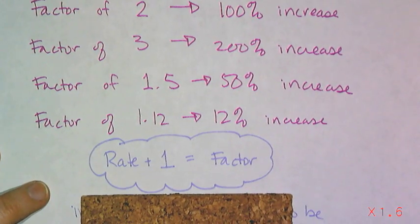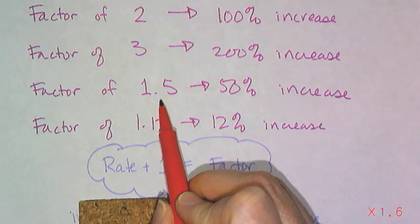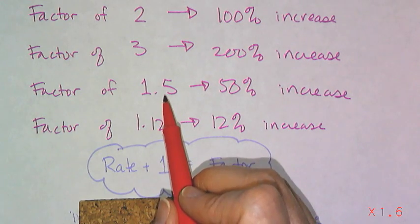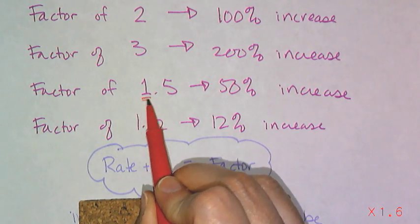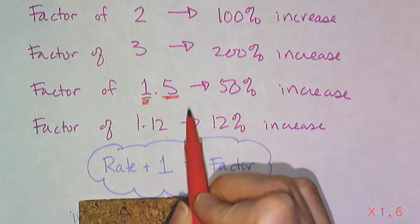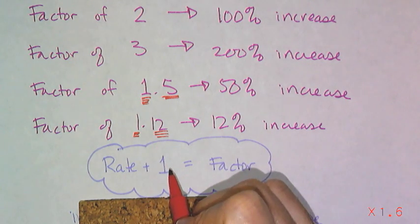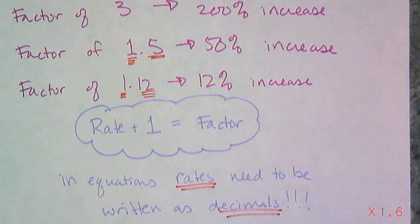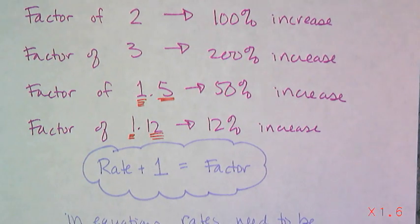So if I increase by 12%, my multiplier is 1.12. If I increase by 50%, my multiplier is 1.5. And the relationship, if you haven't noticed it, it is that you take the rate, you add 1, and then you get the factor. Now the reason why it's the plus 1, because if you think about a 50% increase, and if I only multiply something by 0.5, I don't get an increase. I get half of that amount. So in order to account for the original amount, I have to have that 1 times it. And then that part right there, the 0.5, is the increase. So this 1 is the original amount, this 0.12 is the 12% increase. Remember that in equations, rates need to be written as decimals. You don't leave them as percentages, or else here you'd get 101 as your multiplier. And that's an insane rate.